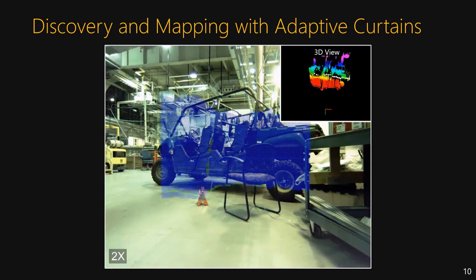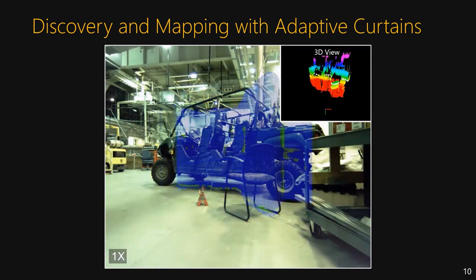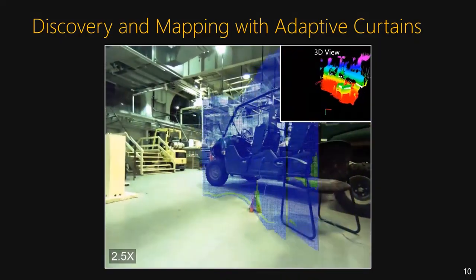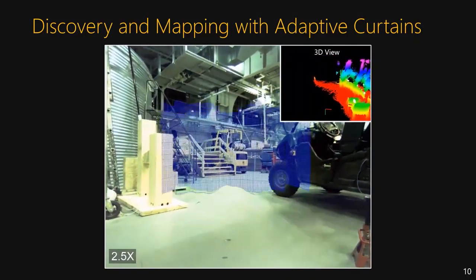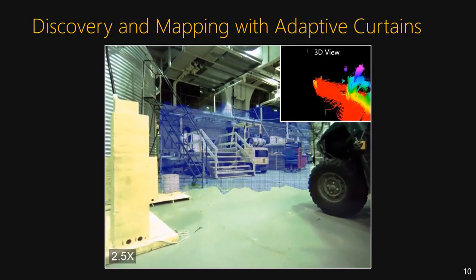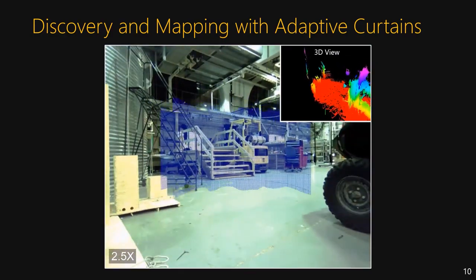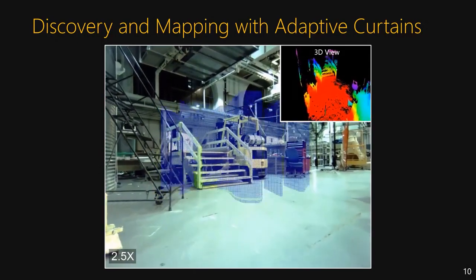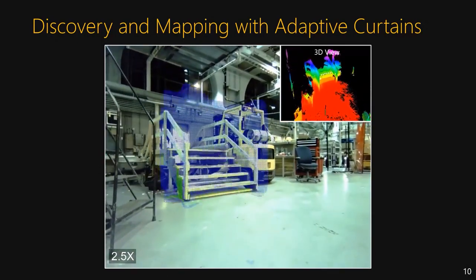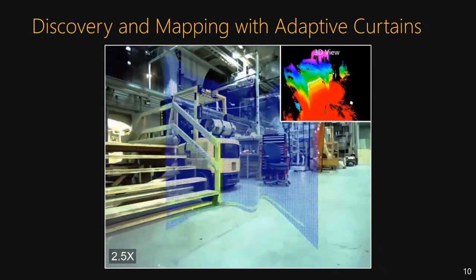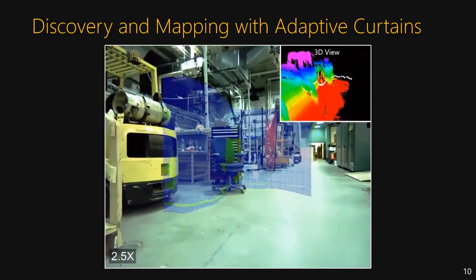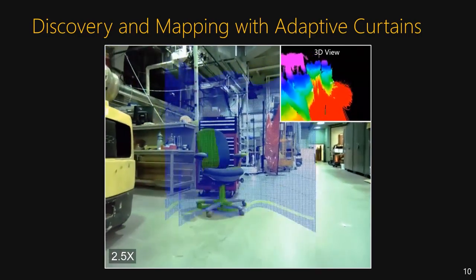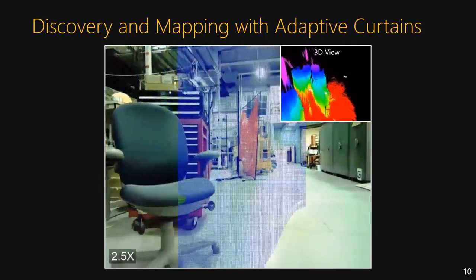Here we use adaptive curtains to map a high bay environment from a robot. As the robot navigates the environment, the curtains change to follow the contour of the scene out to a maximum distance of 5 meters. When no objects are immediately present, the device searches the environment with random curtains until objects are found. Notice that as it moves through the environment, the curtains tightly form around the front surfaces of objects. Onboard localization is used to create a map of the environment using the detected points.